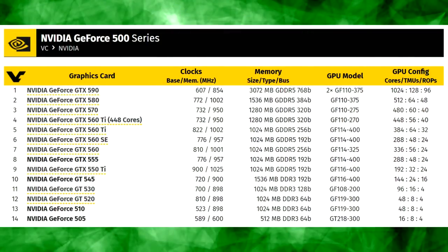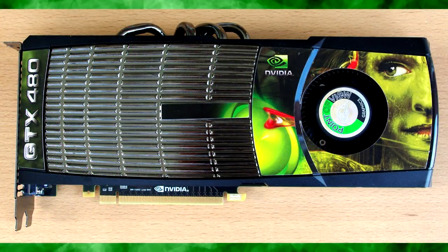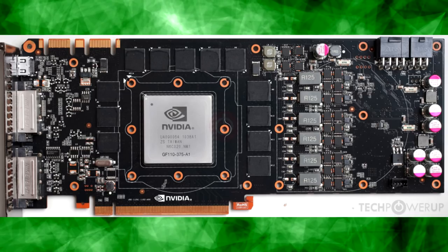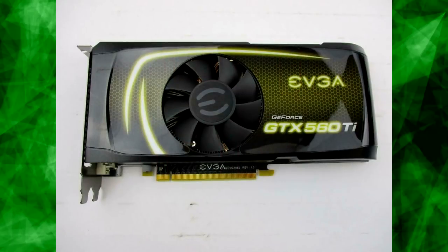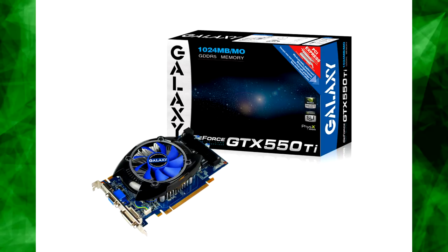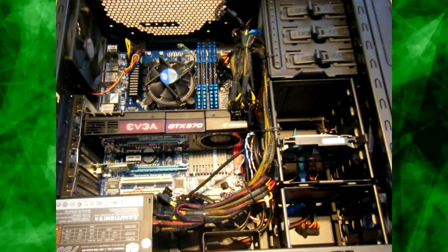The first modern NVIDIA TI cards were released with the 500 series GPUs, which featured refreshed Fermi GPUs from the GTX 400 series — including the legendary GTX 480 with its insane performance, power, and temperature production. The 500 series were significantly modified versions produced using the 40nm fabrication process, and saw the introduction of the GTX 560 TI and the GTX 550 TI. I actually briefly owned a GTX 560 TI, but it kept making my monitor go black, so I returned it and got a GTX 570 instead.